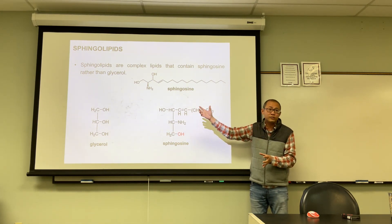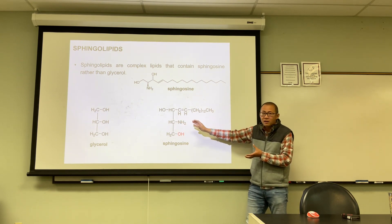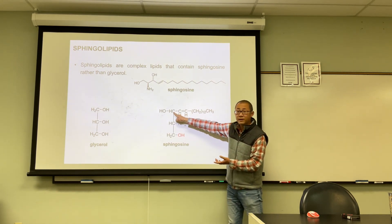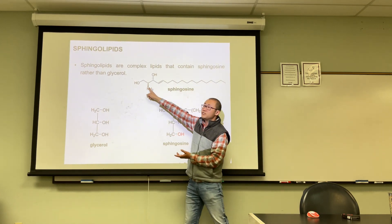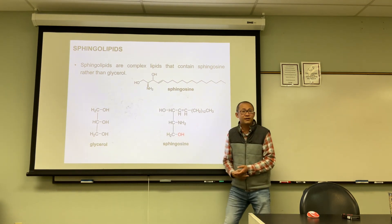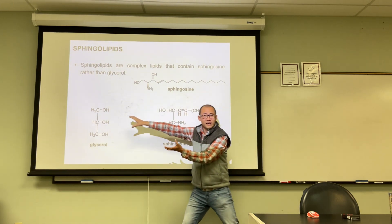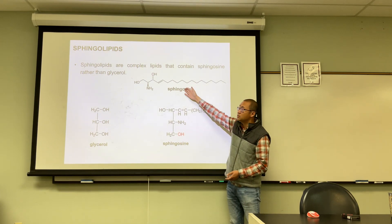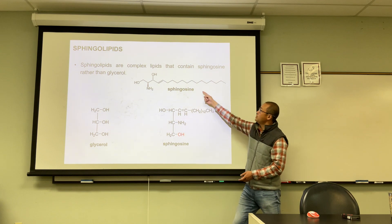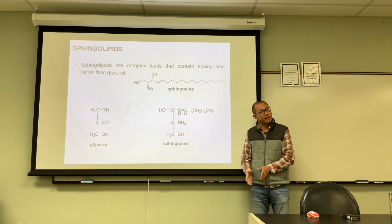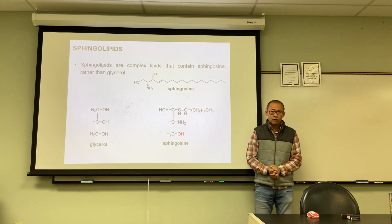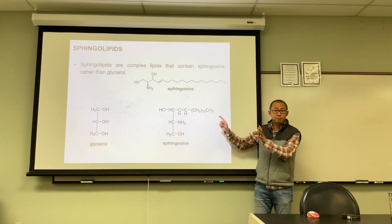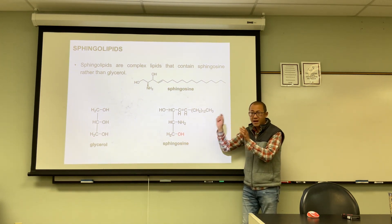To better compare the structures of glycerol-based lipids and sphingolipids, we draw sphingosine mimicking how we draw glycerol. In glycerol there are three OH groups; in the sphingosine structure there is a carbon with an OH, a carbon with NH2, and a carbon with an OH — three carbons analogous to glycerol's structure, but with a long hydrocarbon chain already attached.